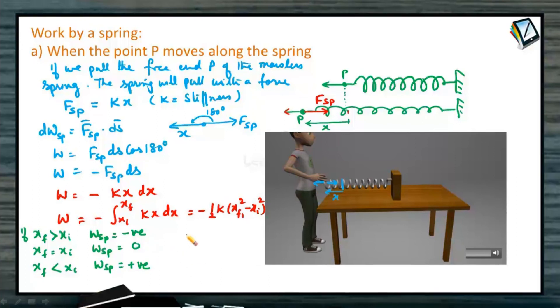If we take initially x initial to be equal to zero, that means the spring is in its natural length and x final is equal to x, then work done by the spring should be equal to half of k x square minus. Spring always performs negative work when deformed, compressed or elongated, it does not matter.